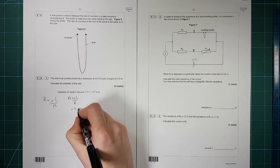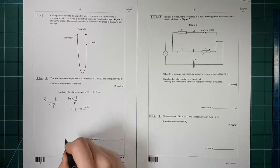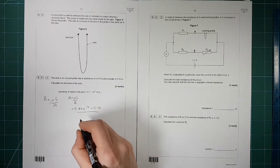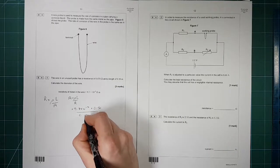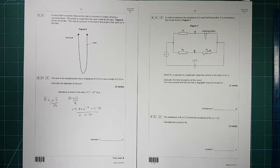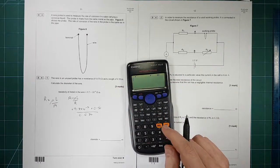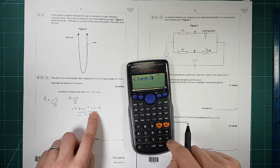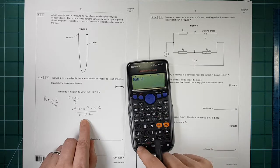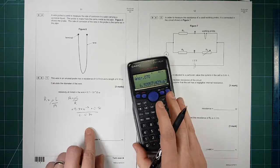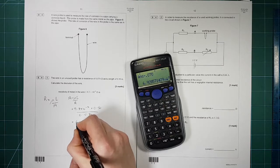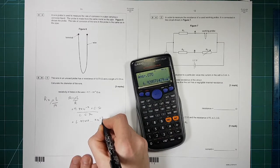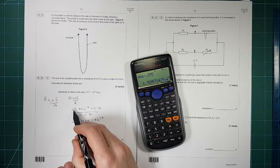So rho is 9.7 times 10 to the minus 8 ohm metres. We need to times that by the length, which is 0.50, and we need to divide that by the resistance, which is 0.070. So let's put that into our calculator, 9.7 times 10 to the minus 8 times by half, divided by 0.07 gives us 6.92857 times 10 to the minus 7. That's the cross-sectional area.